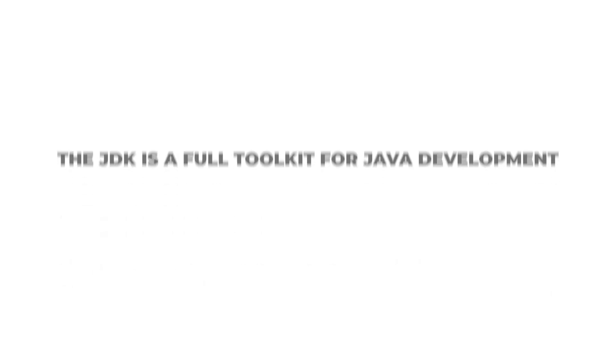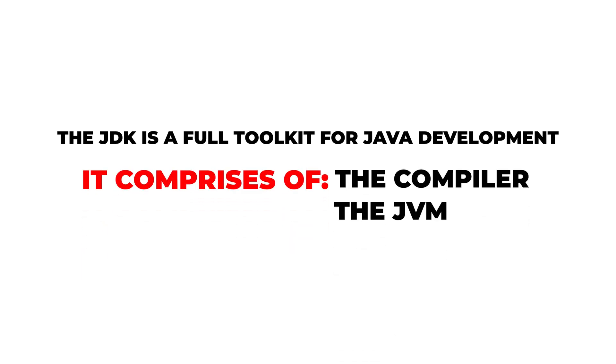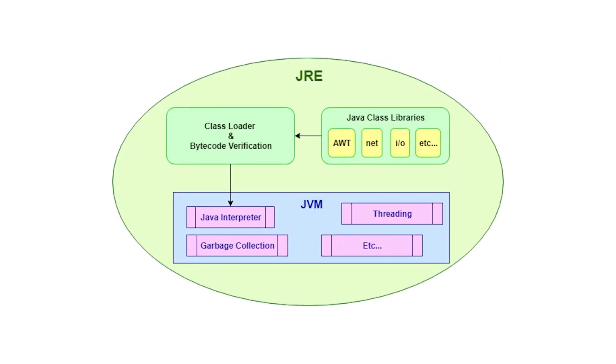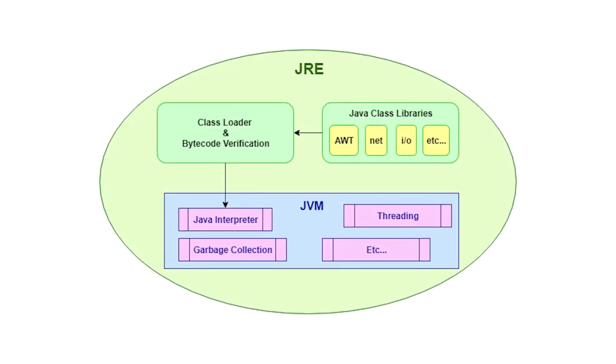Here's what we've learned today. The JDK, or Java Development Kit, is a full toolkit for Java development and comprises the compiler, the JVM, libraries, and dev tools. The JVM, or Java Virtual Machine, executes bytecode enabling cross-platform compatibility. The JRE, or Java Runtime Environment, contains the JVM and libraries but does not include the compiler, as it's only meant for running Java applications. Maven and Gradle help automate builds, manage dependencies, and package Java applications efficiently. Java may seem complicated, but once you understand how these pieces fit together, it all makes a lot more sense. If you enjoyed this video, make sure you like and subscribe for more. If you have any topics you'd like to see me cover, leave them in the comments. I'll catch you on the next one. Peace.